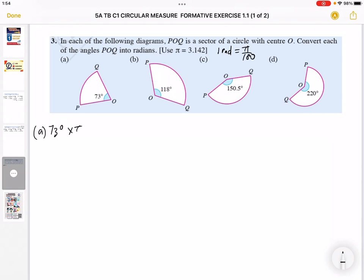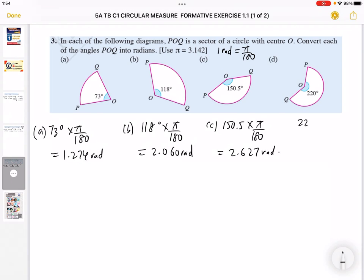For part b, I have 118 degrees, times pi divided by 180. Again, please use 3.142. I got 2.060 radians. The third one is 150.5 degrees times pi over 180. I got 2.627 radians. Lastly, 220 degrees times pi divided by 180: 3.840 radians.